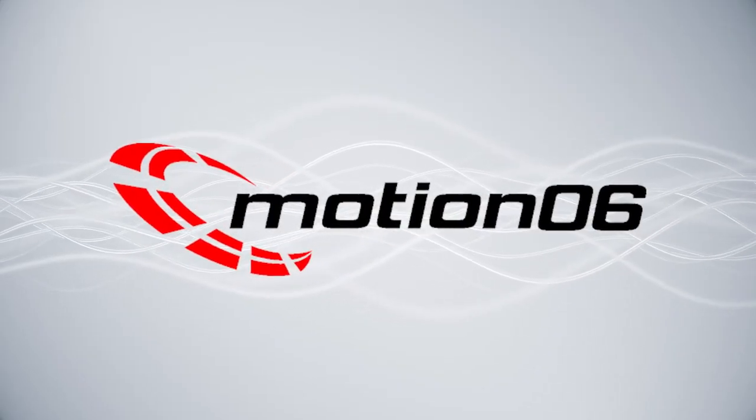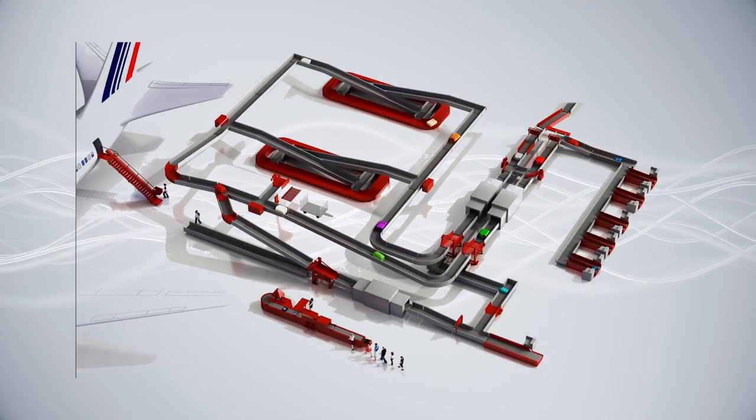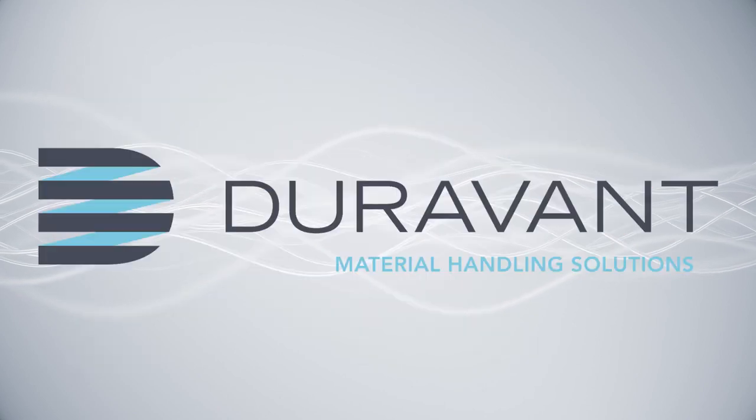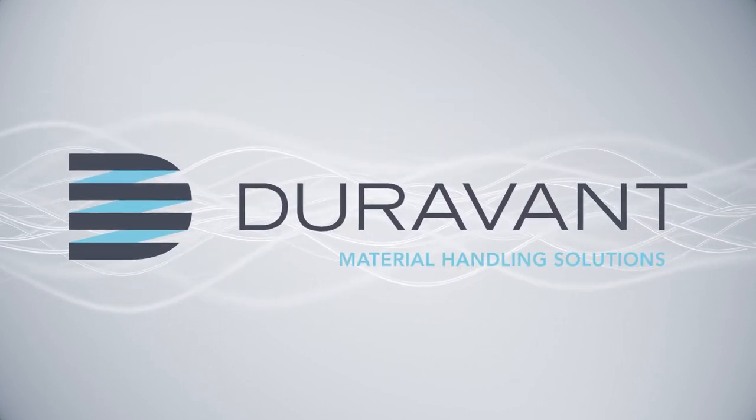CB80 Conveyors are designed and built by Motion06, a leader in rugged conveyors for logistics and airport applications throughout Europe and Asia. Motion06 is a sister company of QC Conveyors within the Duravant Material Handling Solutions family.